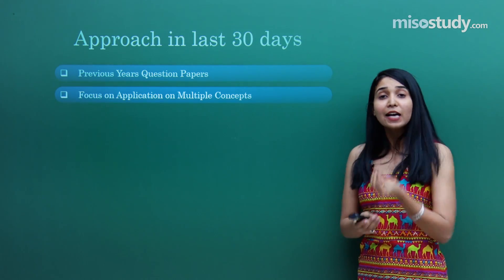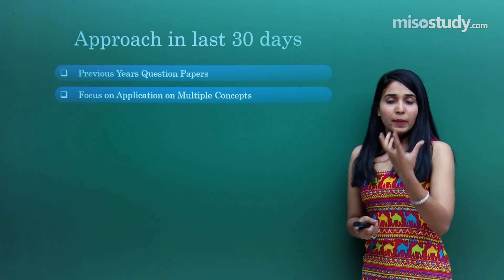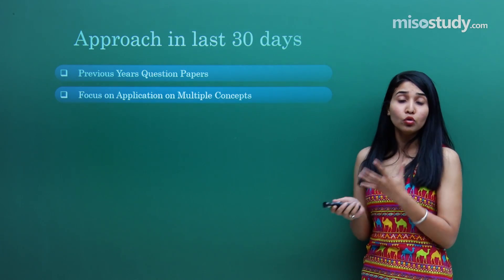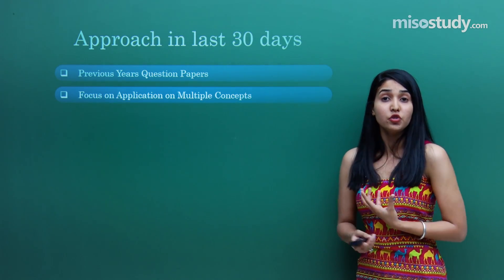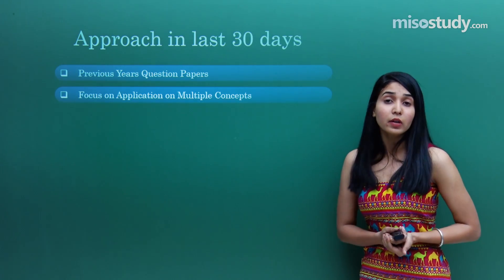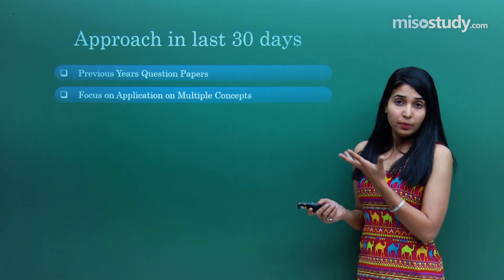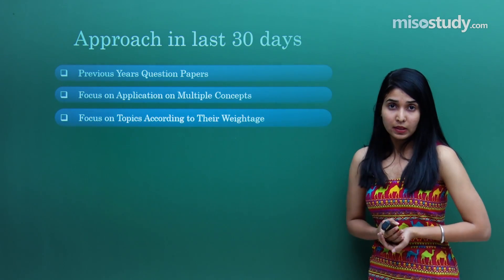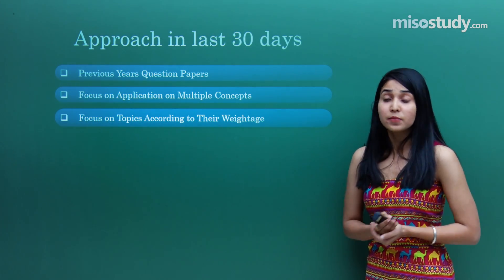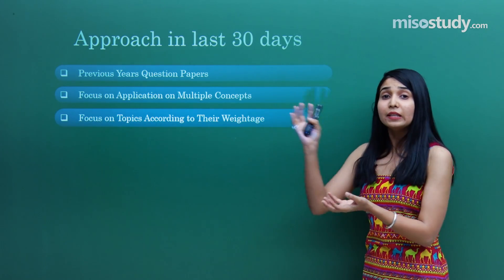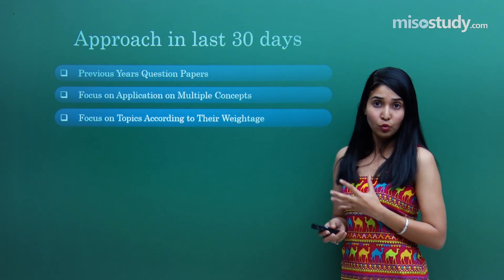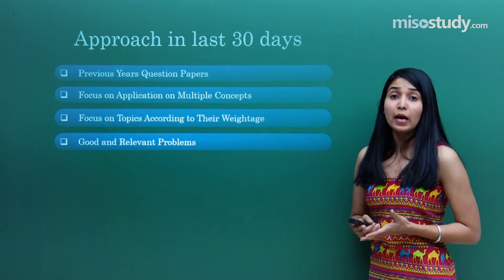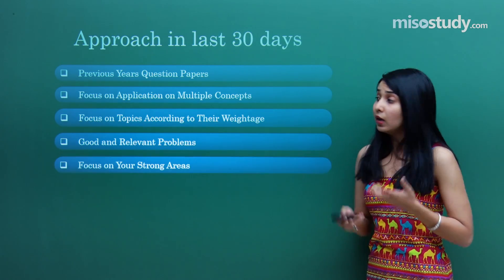The most important thing you have to do — practice as many previous year question papers as possible. When you do previous year papers, you get to know the mindset of the IIT examiners — what they are making, what you have to do. You will be able to analyze each chapter yourself and know which sections to cover and which to skip. Also, focus on the application of multiple concepts, because this is not JEE Mains — this is Advanced. You should know how to apply different concepts within a single question.